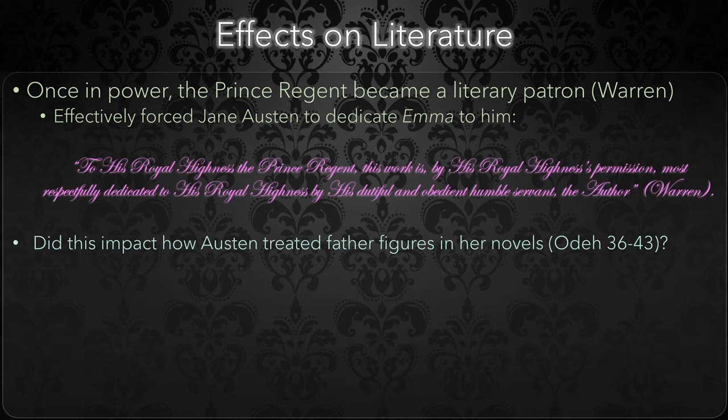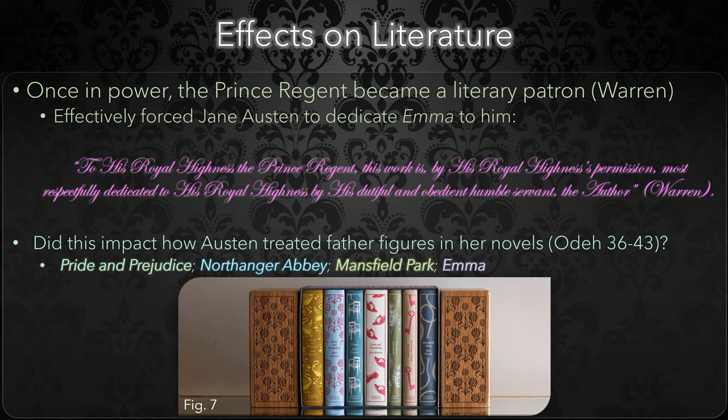Could this have affected the way she treated father figures in her novels? Well, we know that in Pride and Prejudice, Mr. Bennett was somewhat ineffectual as a father. He refused to control Lydia even when it would have been for her own good, and his search for his missing daughter was fruitless. In Northanger Abbey, Mr. Moreland is an absent clergyman who is barely present as his daughter faces various trials and tribulations. Of note is that Austen wrote Northanger Abbey in 1803, but significantly revised it after the start of the Regency period.